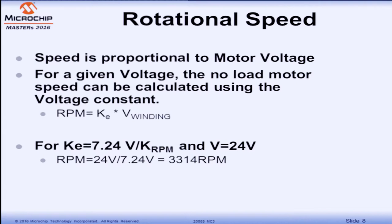The speed is proportional to the motor voltage. For a given voltage, motor speed can be calculated using the equation: constant times the winding voltage. In this particular example, for argument's sake, if you have 24 volts on this motor, the no-load speed is about 3.3K RPM.